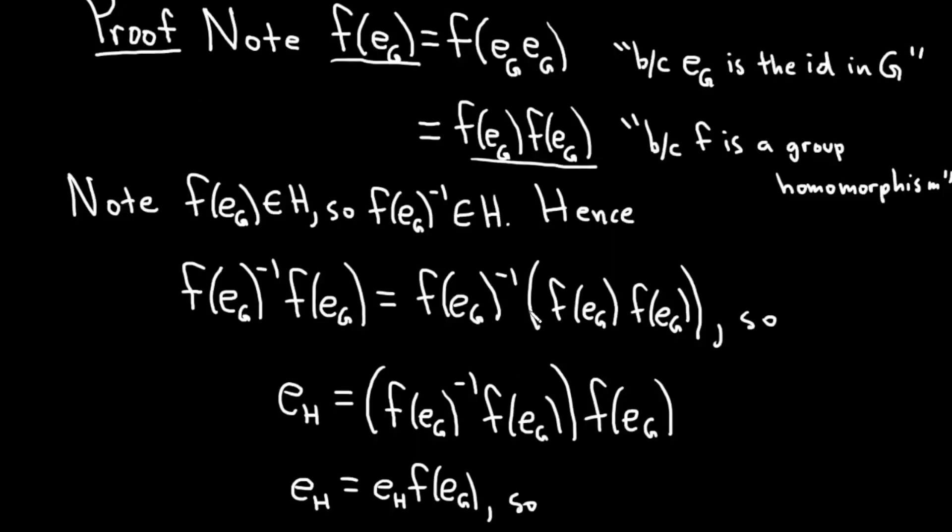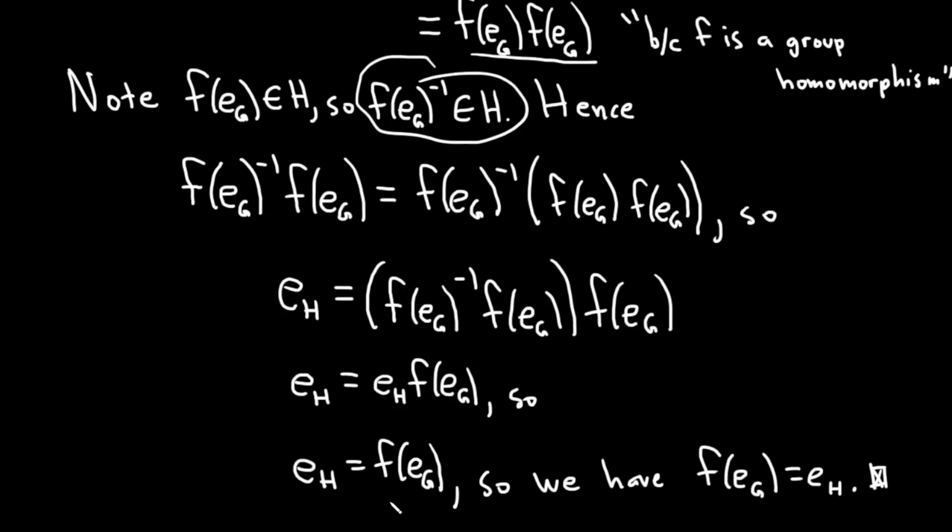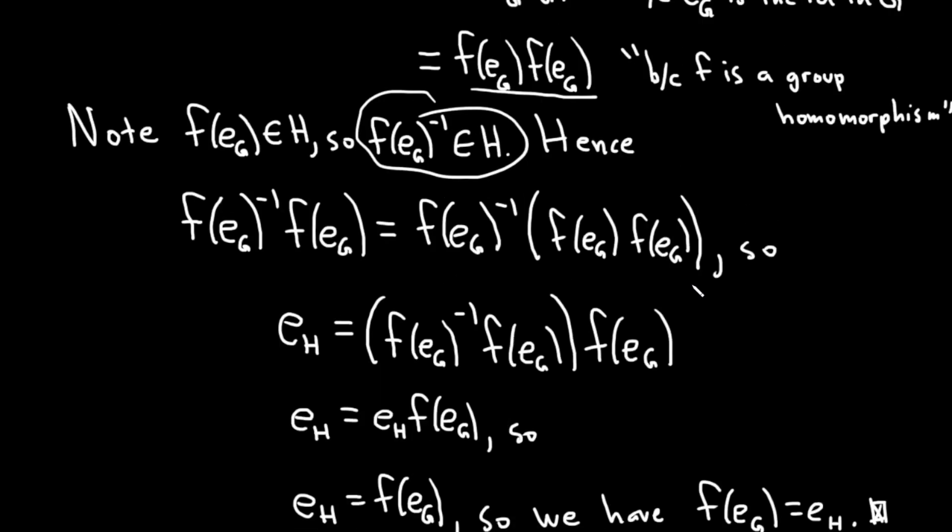So it's pretty simple. Basically, you get here and then you just multiply by this guy here, by the inverse. And then on the left-hand side you just get e. And on the right-hand side one of these cancels, and you're just left with this one here. And that completes the proof.